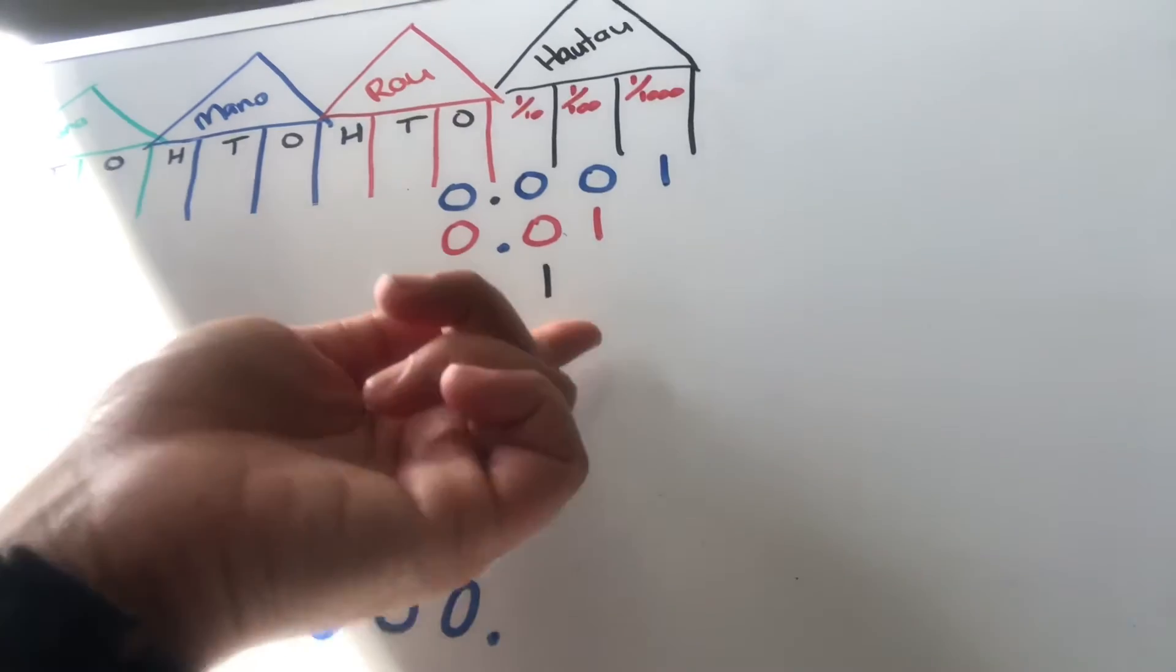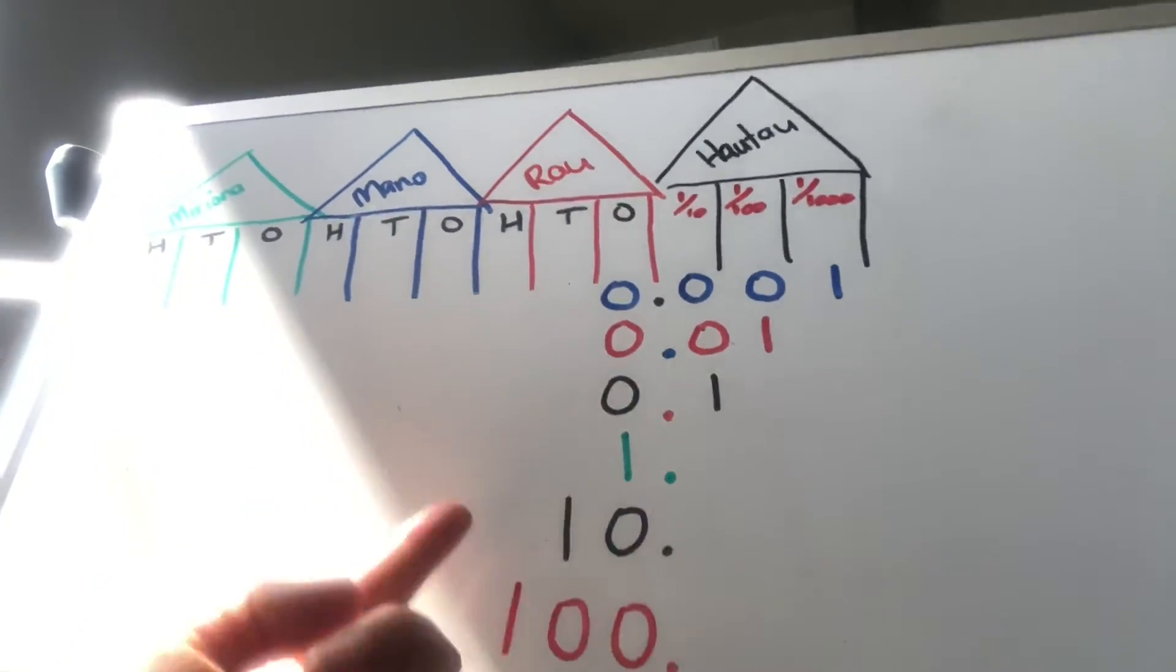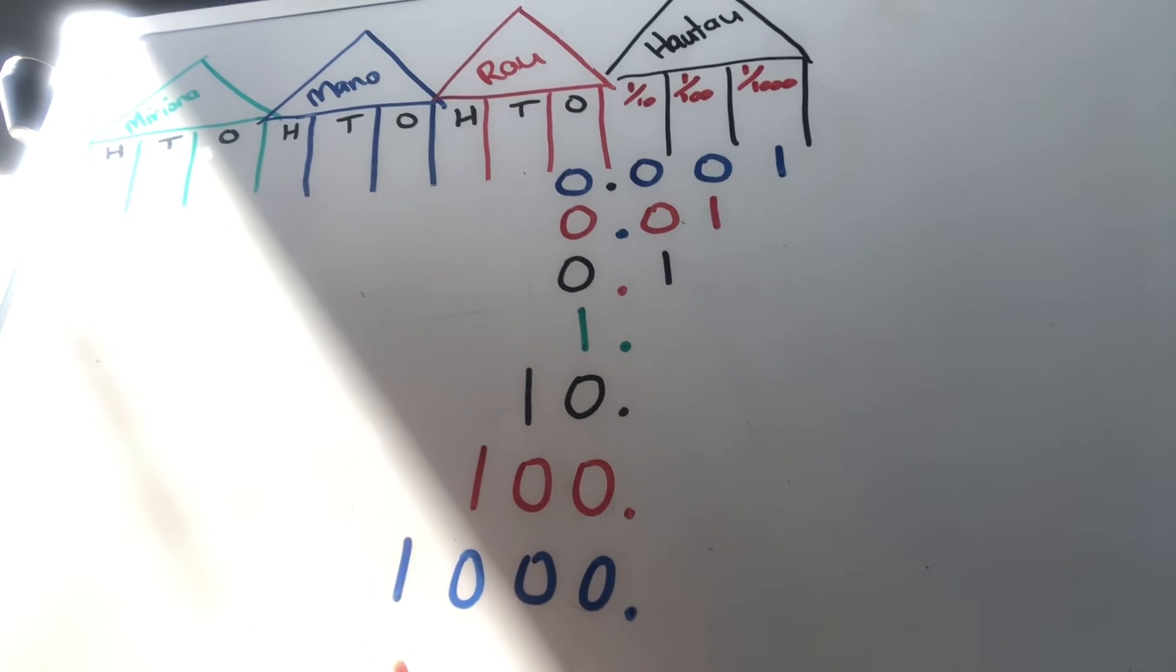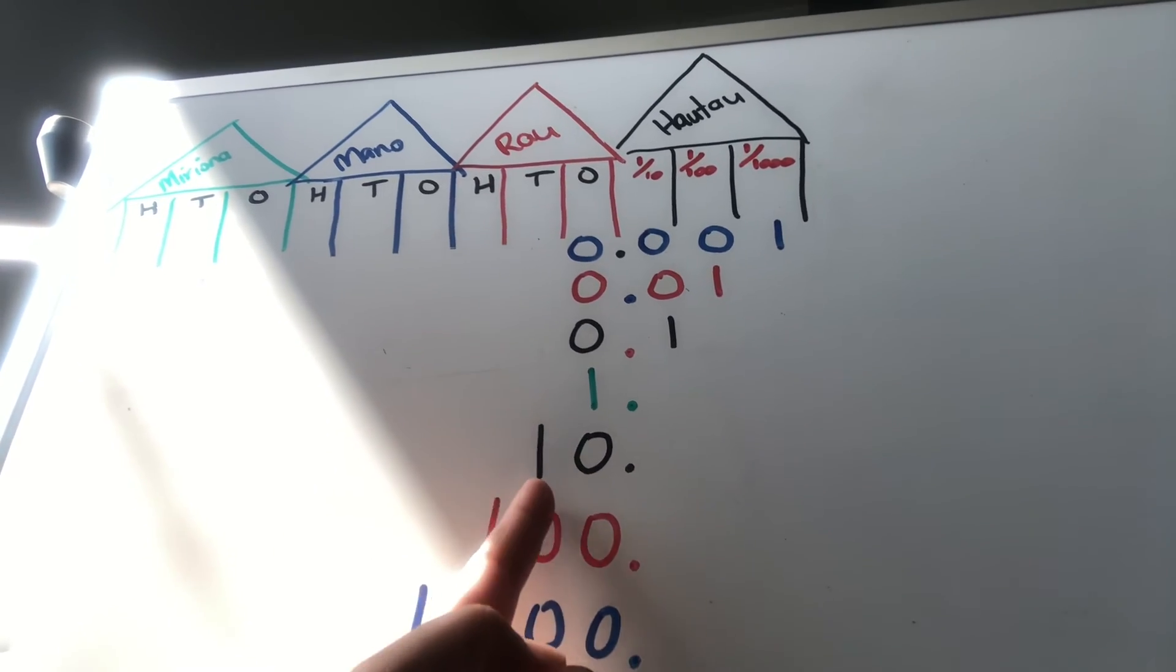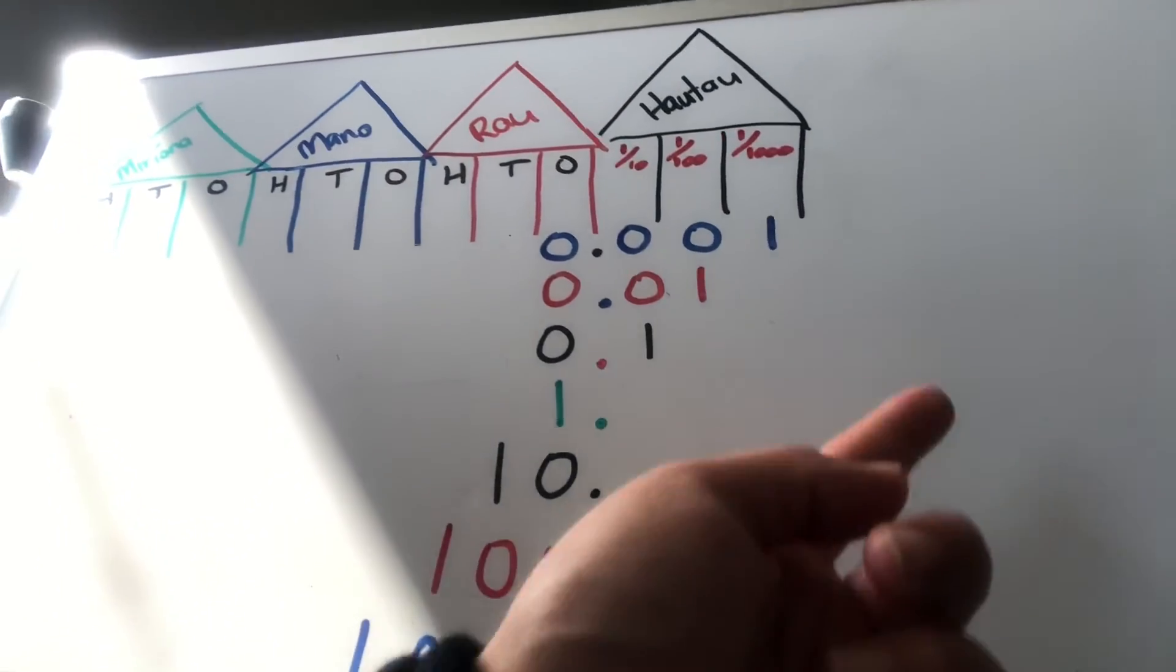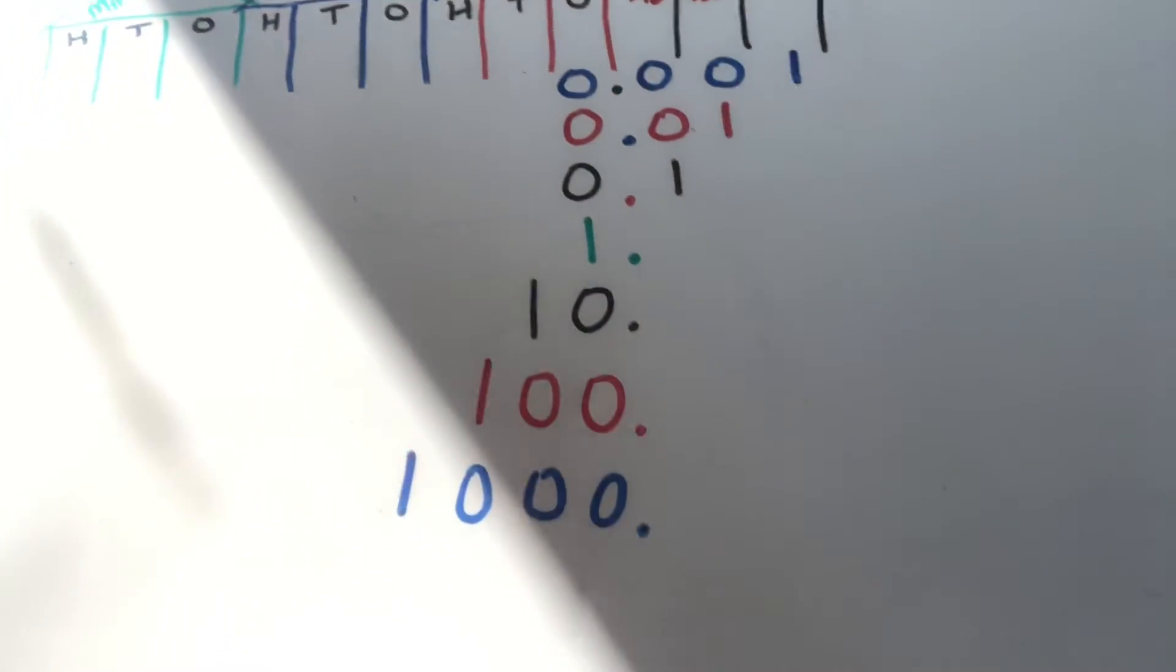And then we know that when we're multiplying by 10, we're getting larger. And last week we also learned that dividing by 10 simply moves us back to the right. So instead of becoming larger when we're multiplying by 10.